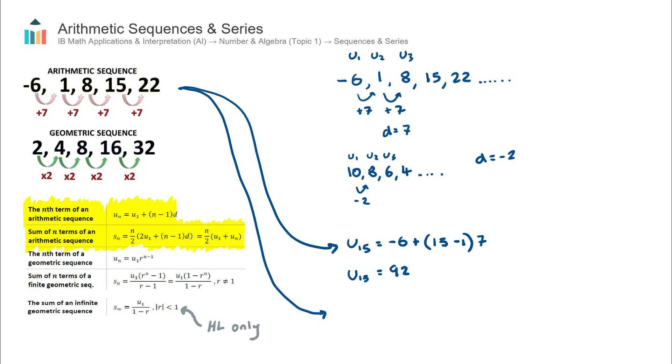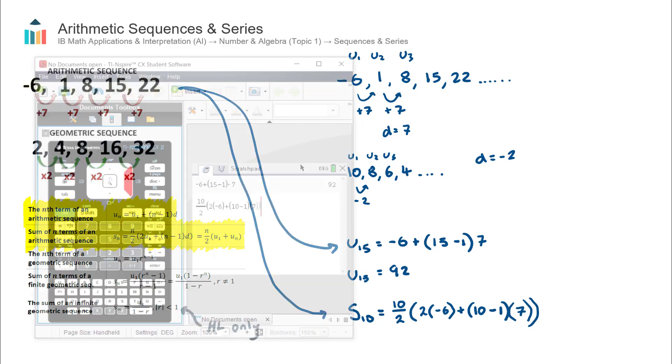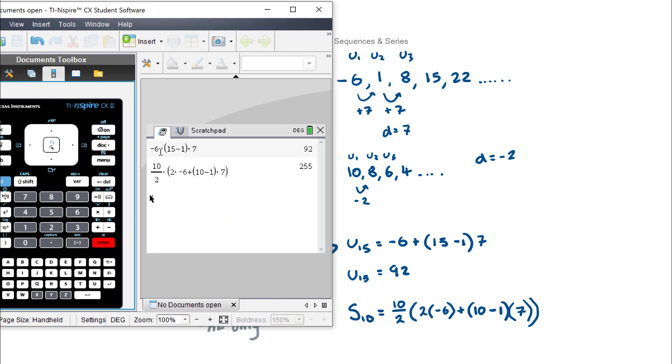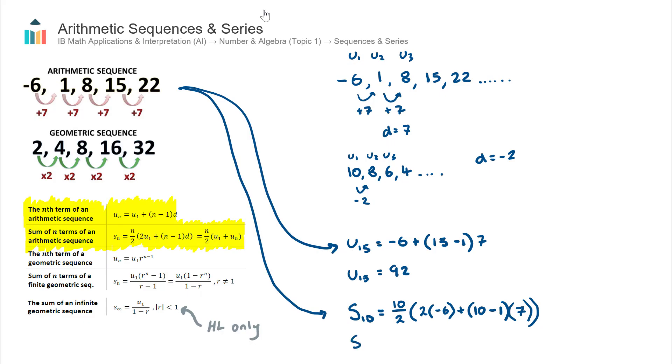I'm going to use the left-hand one. The correct notation is the sum of the first 10 terms, S10. That is equal to n over 2. We're looking to find the sum of the first 10 terms, so it's going to be 10 over 2, multiplied by 2 times the first term, which is negative 6, plus n is 10, take one, multiply by the common difference, which we know is 7. We can use our calculator to find the result of this, and that is 255. So the sum of the first 10 terms would be 255.